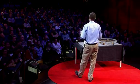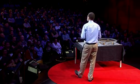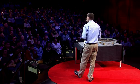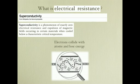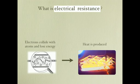What is electrical resistance? Electricity is the flow of electrons inside the material. These electrons, while flowing, collide with atoms, and in these collisions they lose a certain amount of energy, dissipating it in the form of heat — and you know that effect.